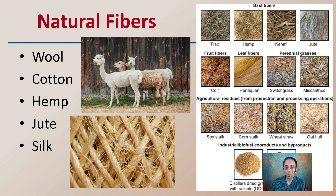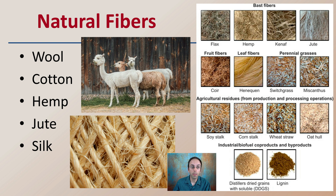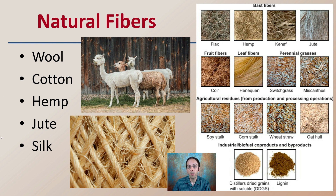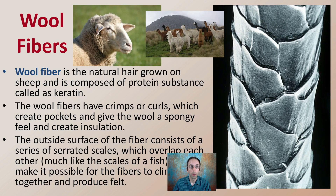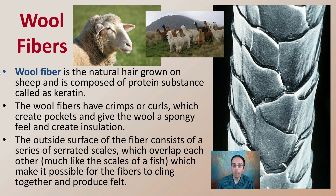Natural fibers — while there are many, the ones we're going to be focusing on here are wool, cotton, hemp, jute, and silk. These are typically made into clothing and likely to be found and analyzed for comparison purposes. Wool fibers are typically a natural hair grown on sheep and are composed of protein substances such as keratin.